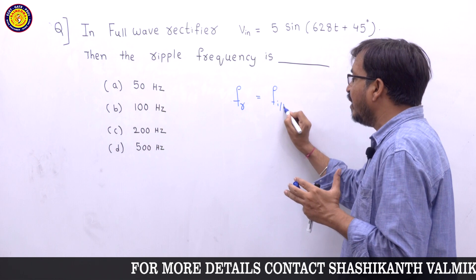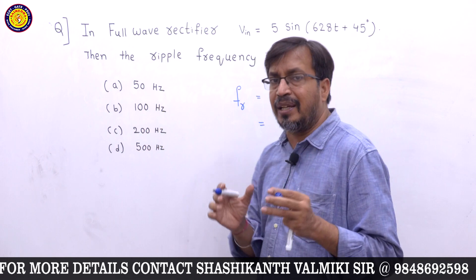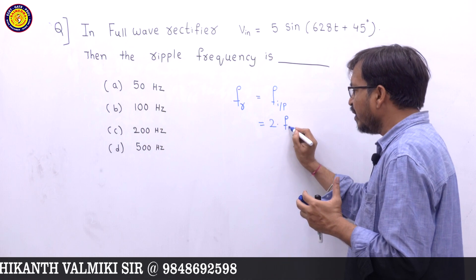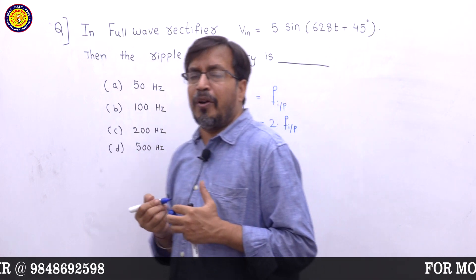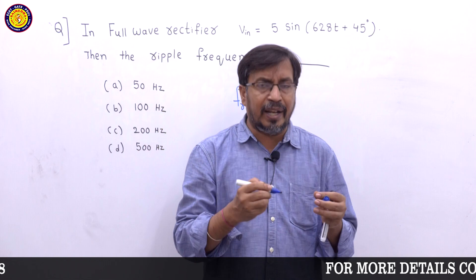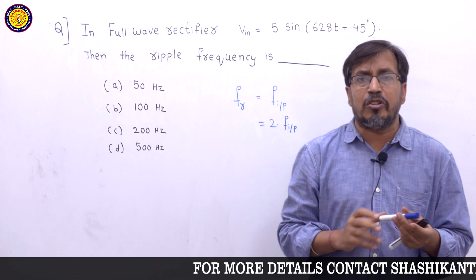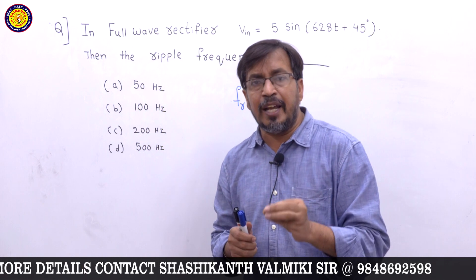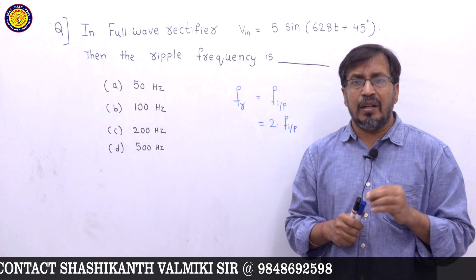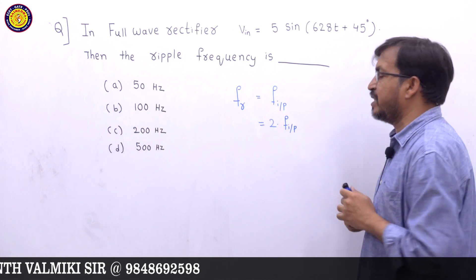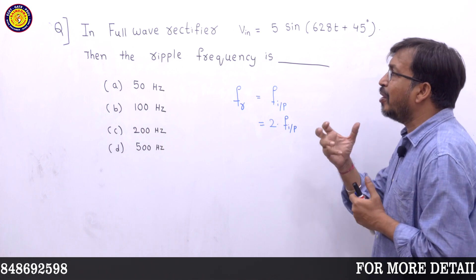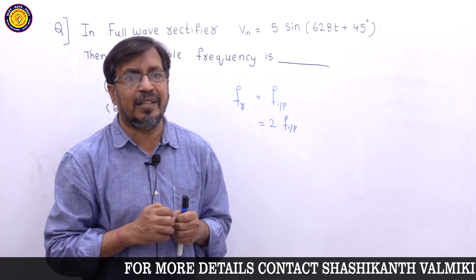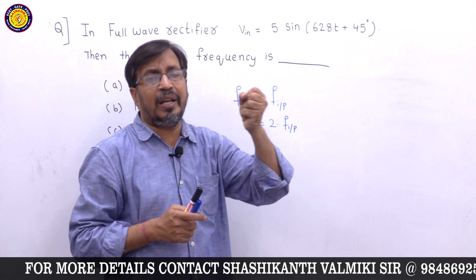The ripple frequency is the frequency of the output waveform. In a half wave rectifier, the ripple frequency is the same as the input frequency. In a full wave rectifier, the ripple frequency is double the input frequency. So first we need to identify the input frequency from the given equation.